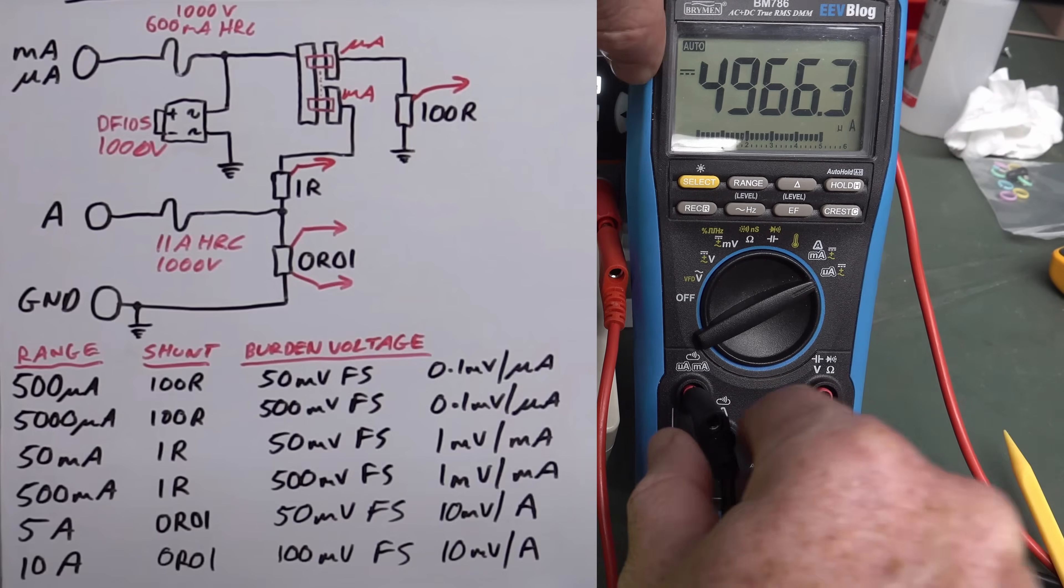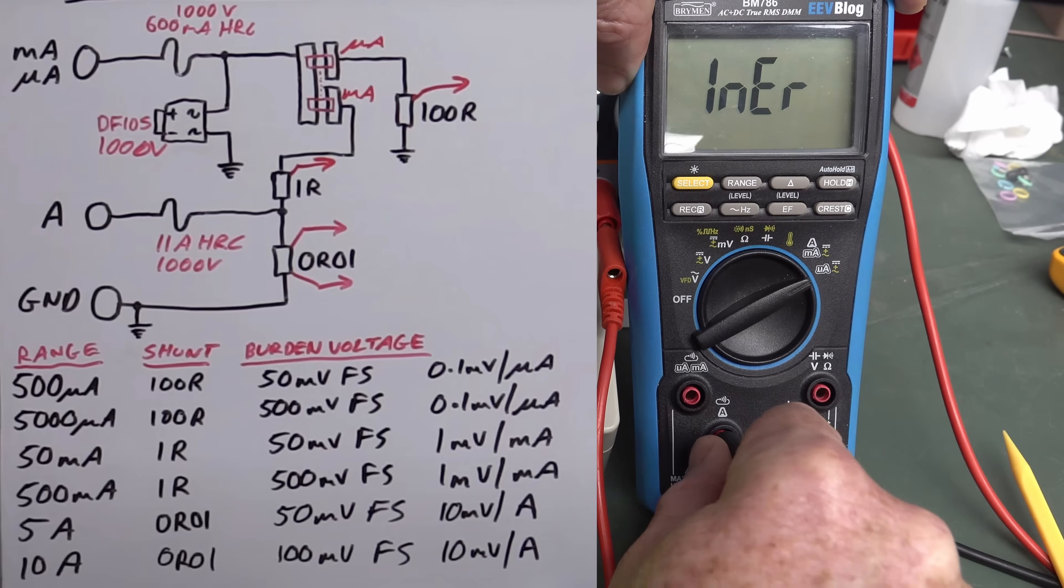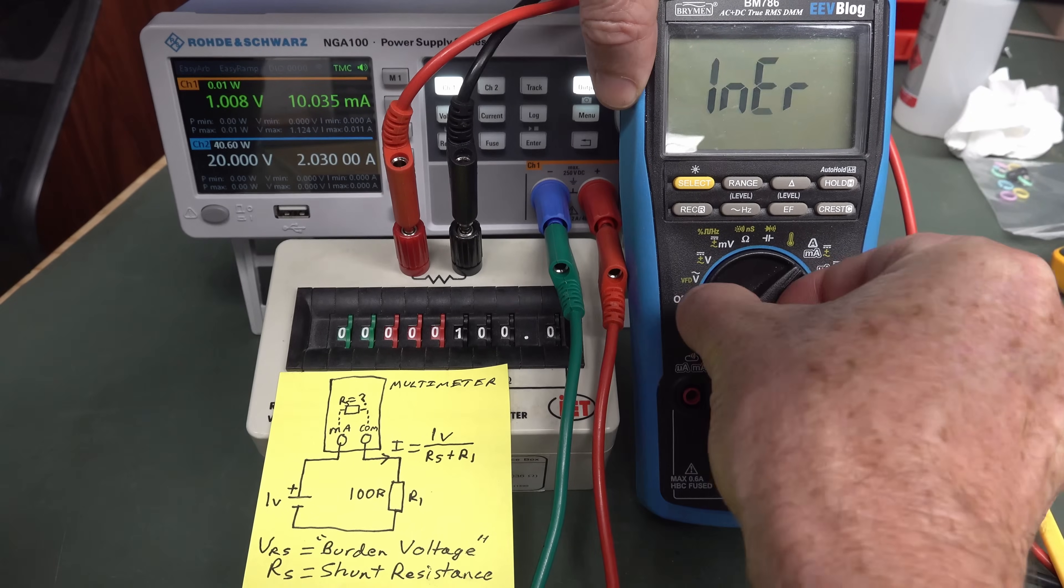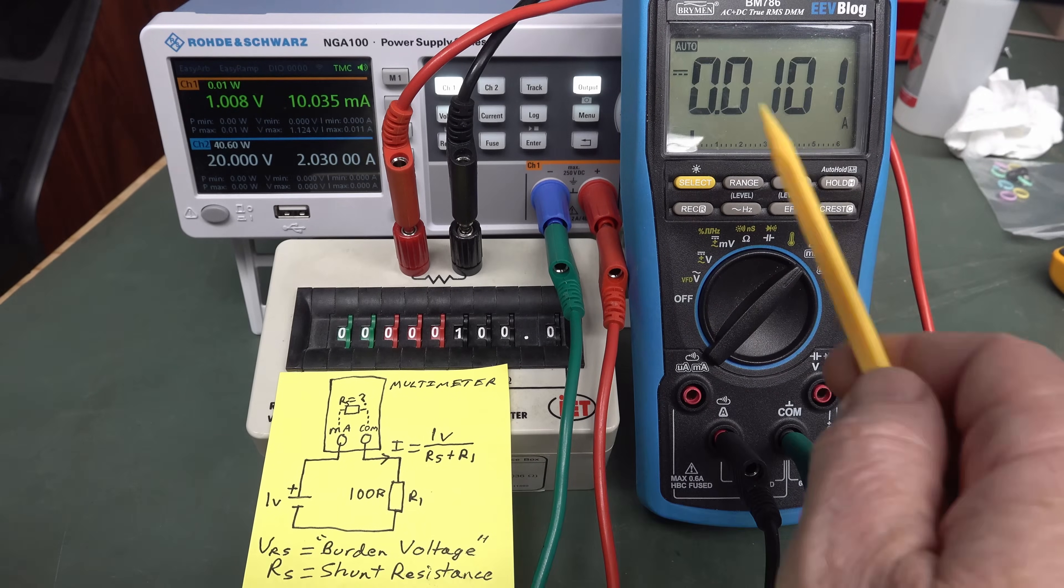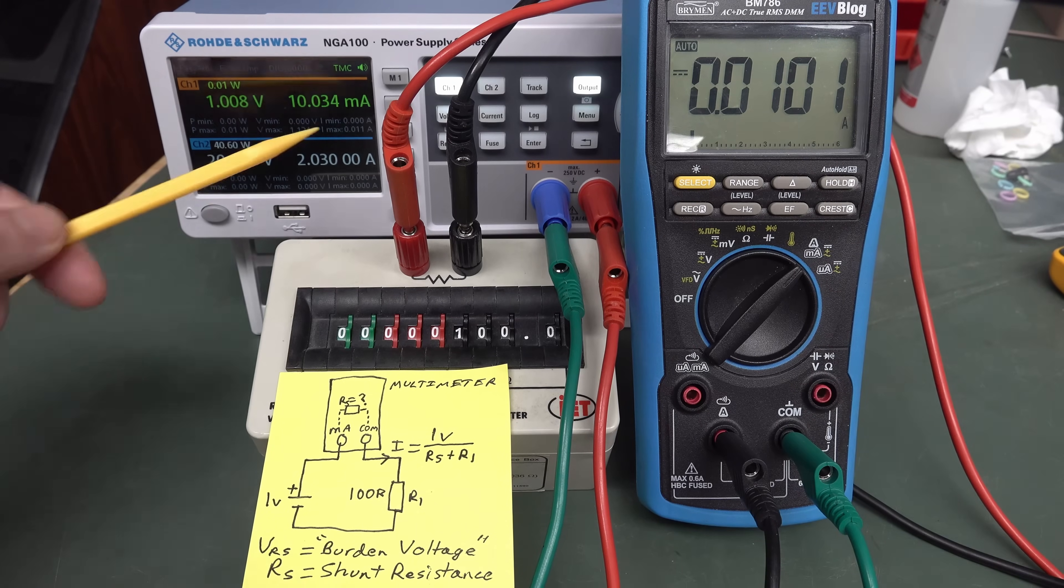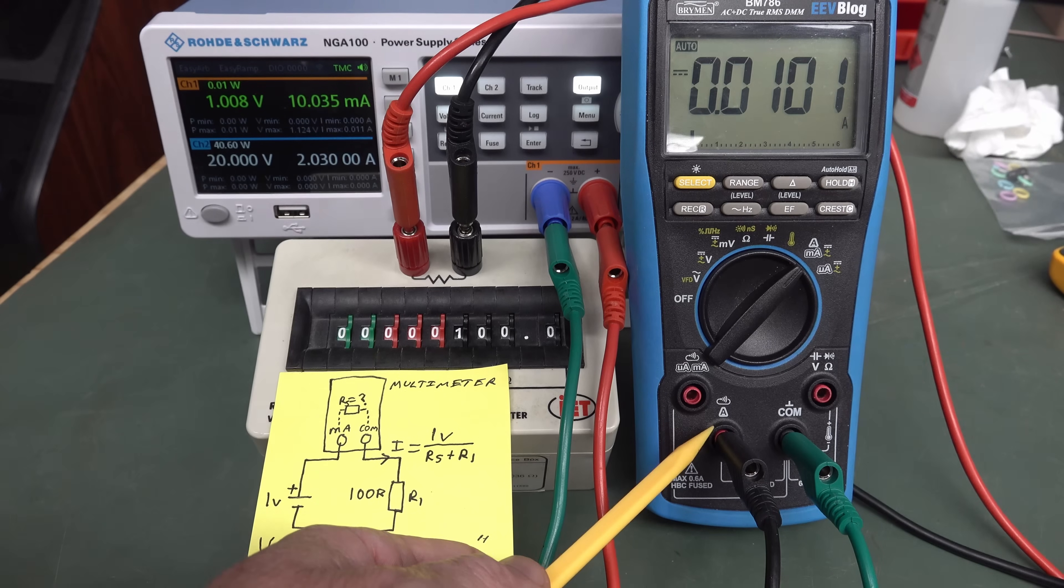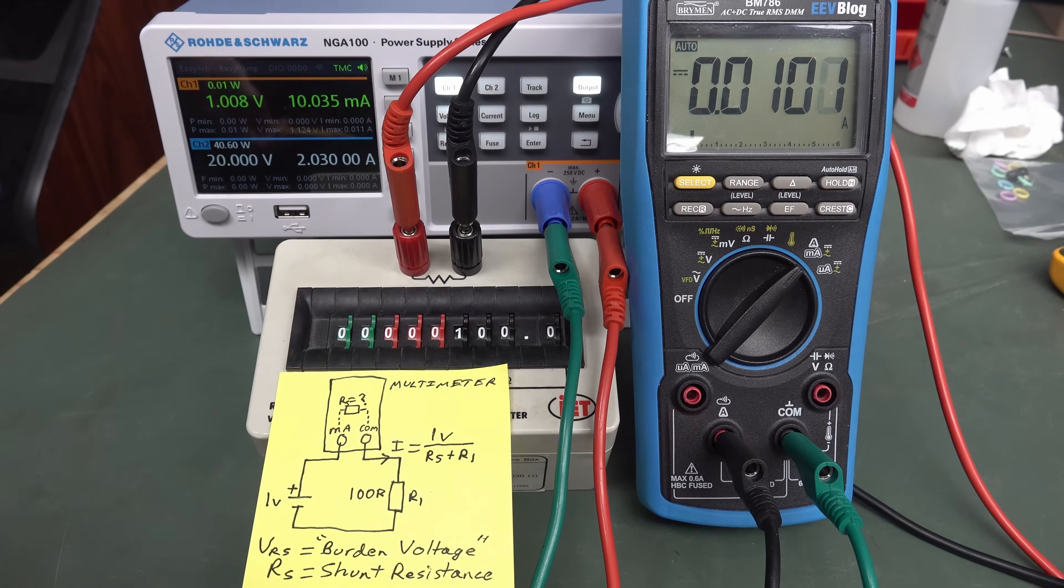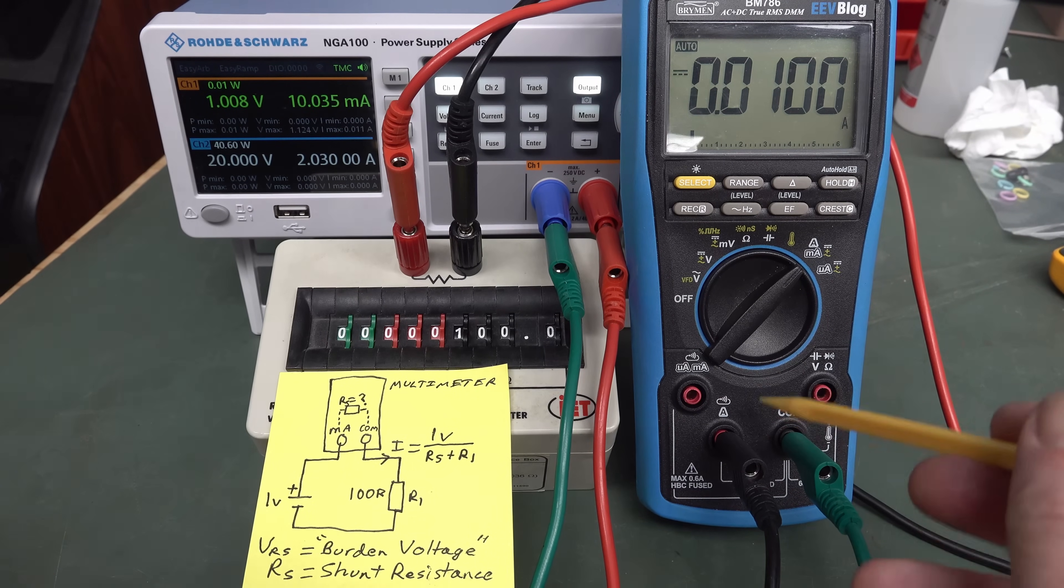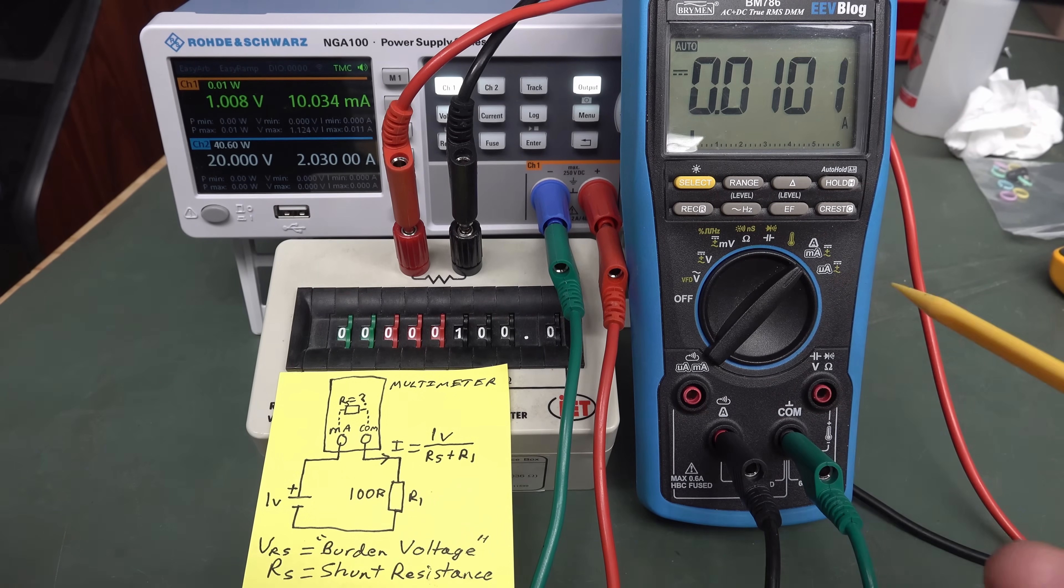And likewise, if we switch over to the amps range here, okay, insertion error, we have to switch back to here. And bingo, we're now actually back to our 10 milliamps. Does that mean that our amps jack doesn't have a shunt resistance in it? No, it actually does. It's just much, much lower than your milliamp or microamp range.